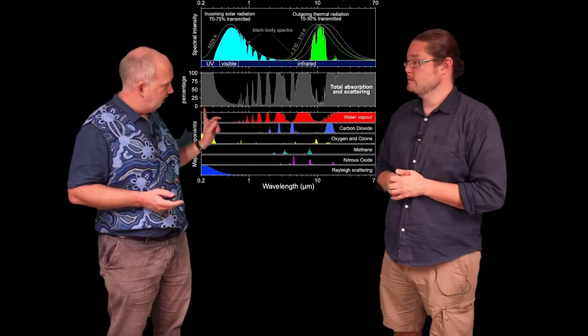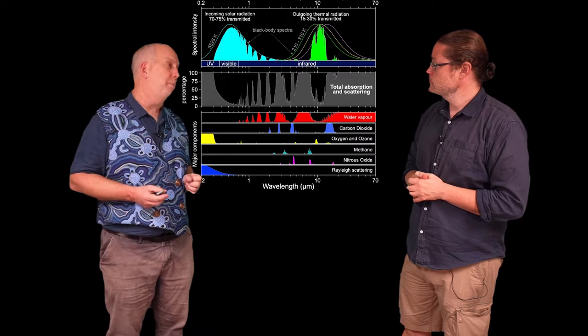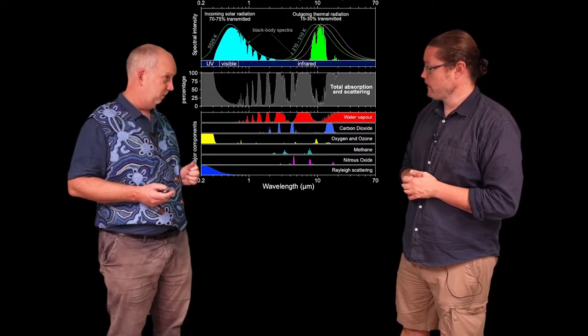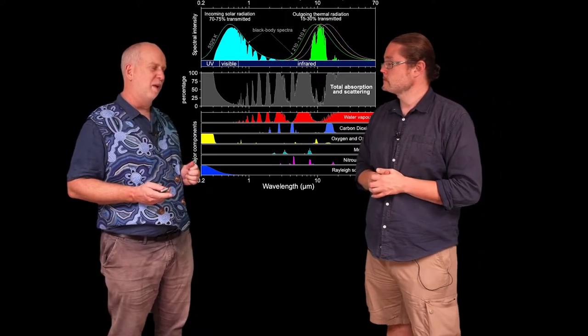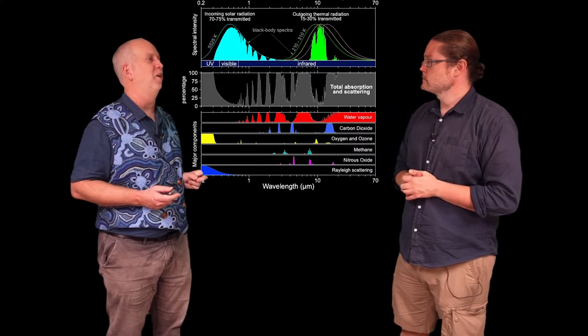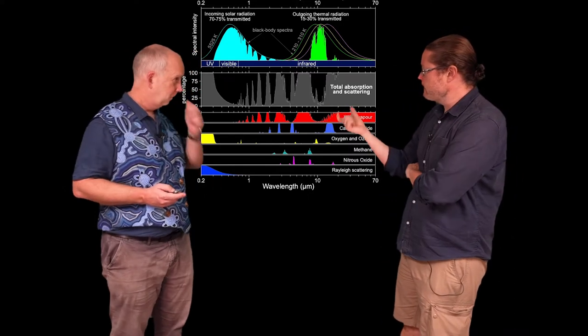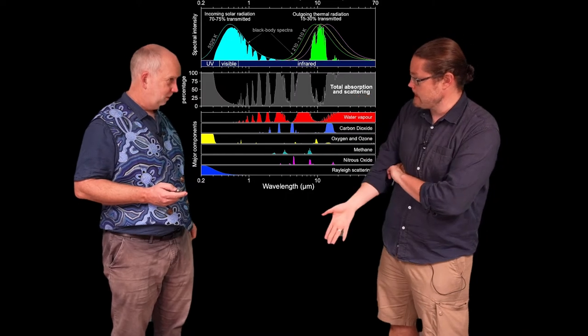And what you can see down here is what wavelengths can penetrate the Earth's atmosphere. And what you can see is that most wavelengths can't penetrate the Earth's atmosphere. They're actually blocked. There's only a few small windows that the light actually makes it to the ground.